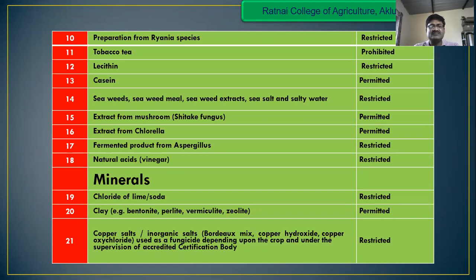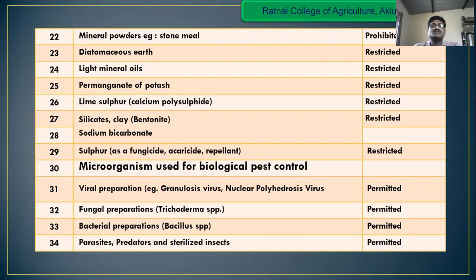Then minerals — chlorides of copper ions are restricted. Clays are permitted. Preparations of copper and salts are restricted. Mineral powder and stone meals are prohibited. Diatomaceous earth is restricted. Light mineral oil, potassium permanganate, lime sulfur, silicates, clays, bentonite, sodium bicarbonate, and sulfur are used as fungicides, nematicides, or deterrents — these are restricted products in organic cultivation.